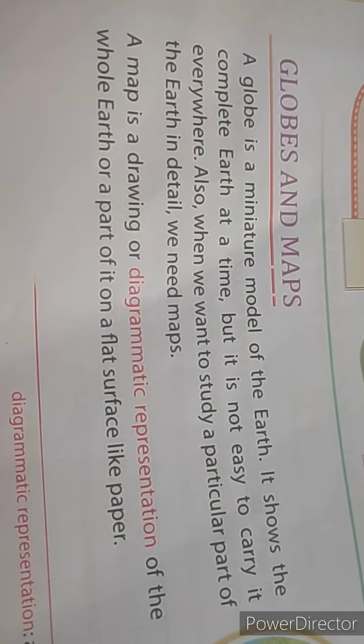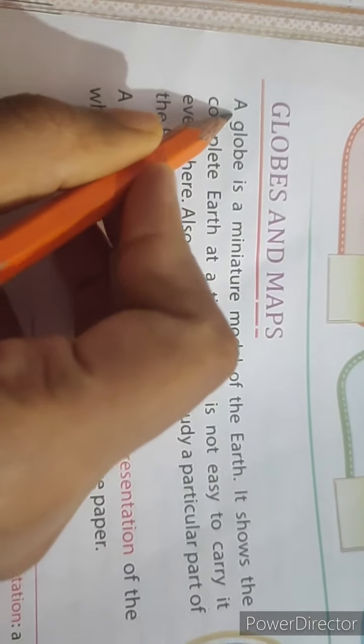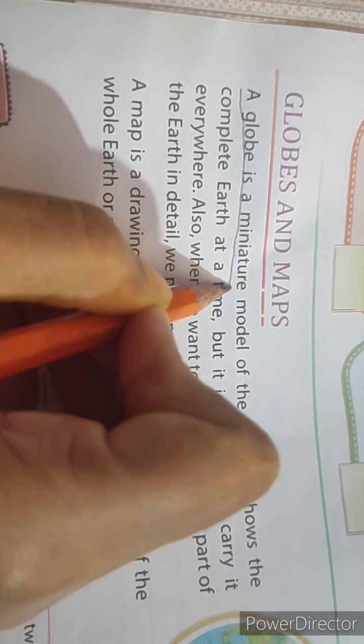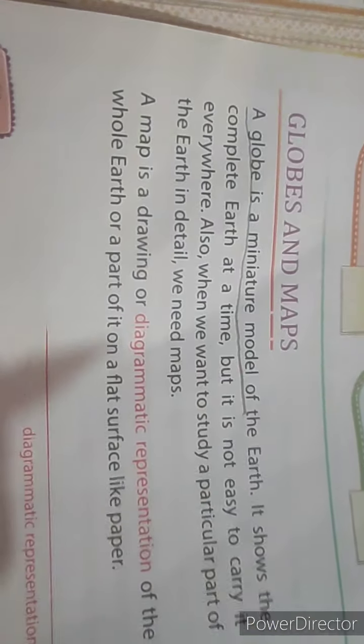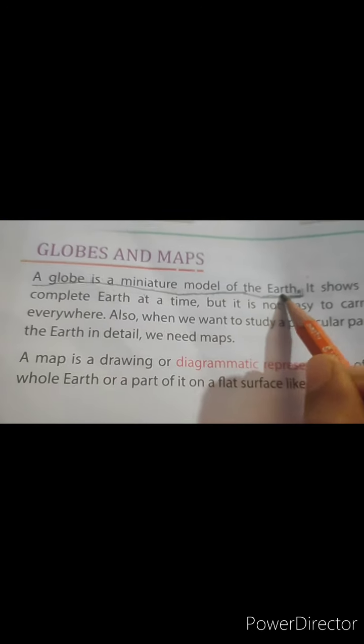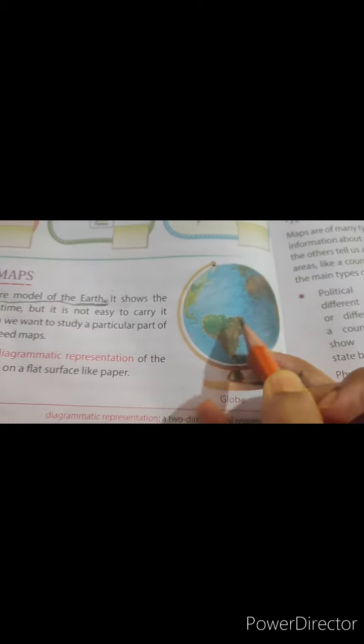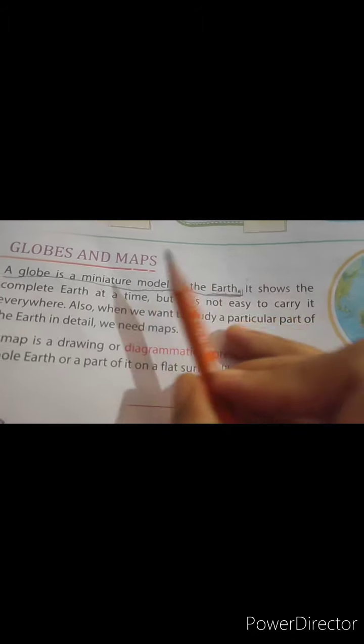Our first topic is globes and maps. As you can see the picture here, it is a picture of a globe — it is looking like a model of the earth. A globe is a miniature model of the earth, meaning it is a small model of the earth. It shows the complete earth at a time, as you can see in the picture.